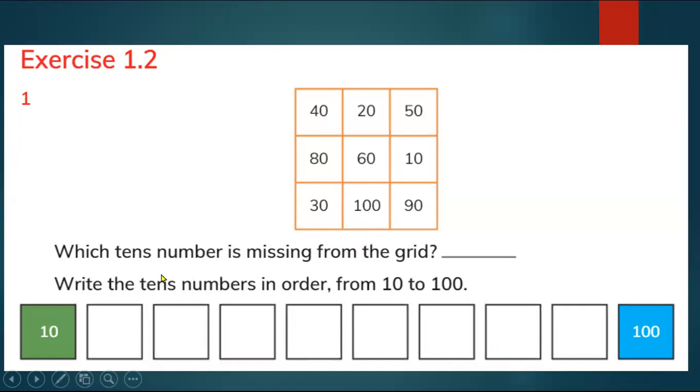So here first you have to look at all the numbers in this grid. In this grid we have 40, 20, 50, 80, 60, 10, 30, 100 and 90.